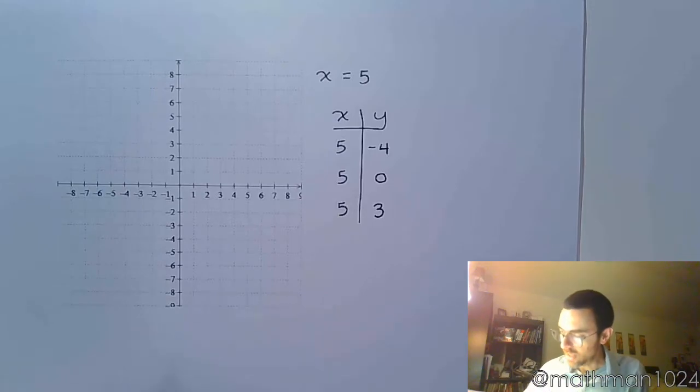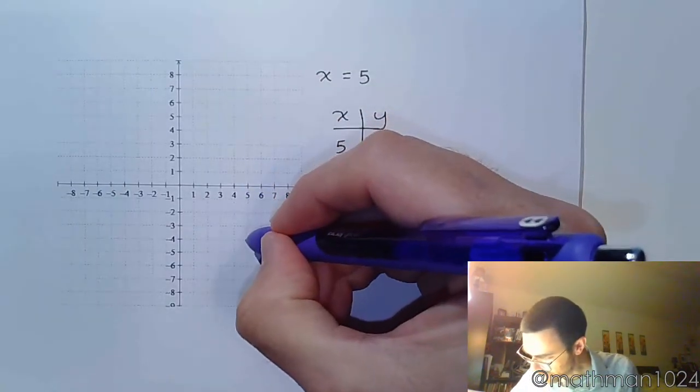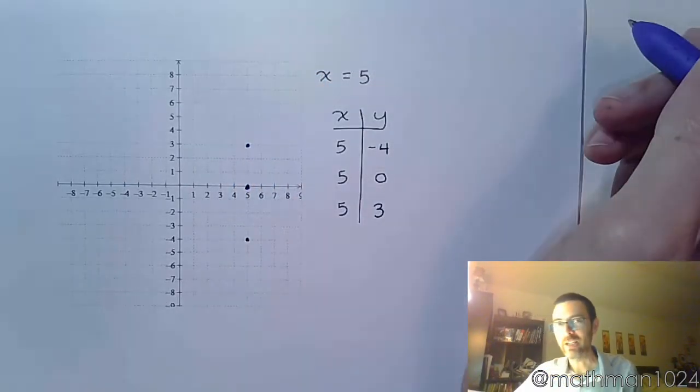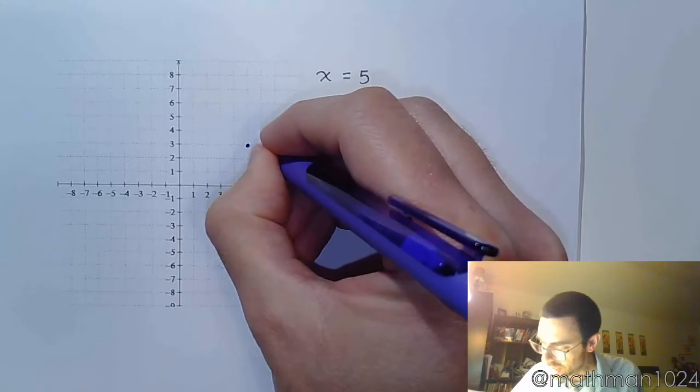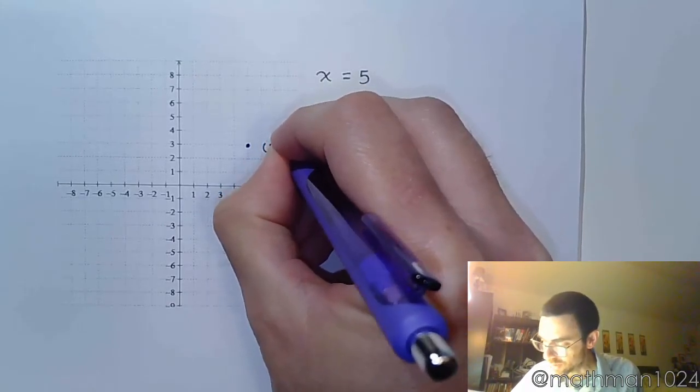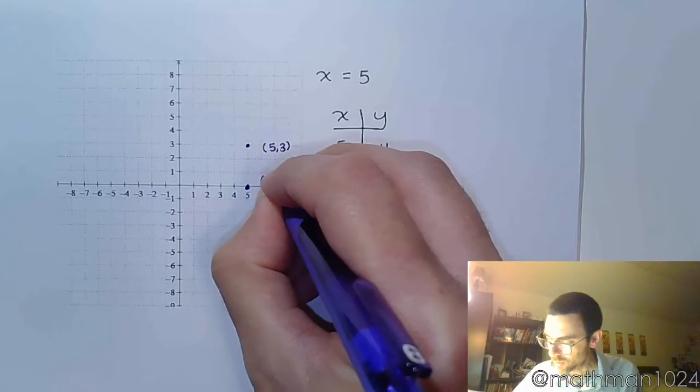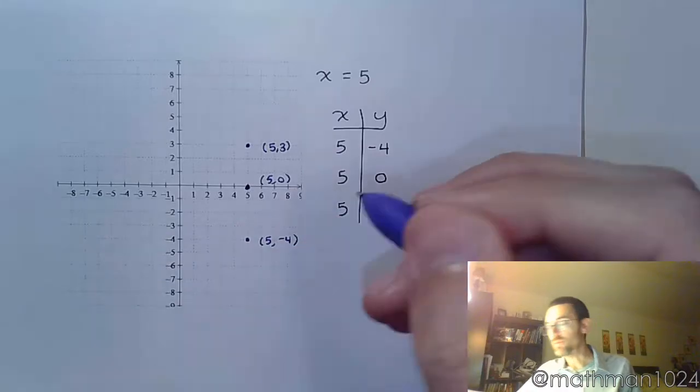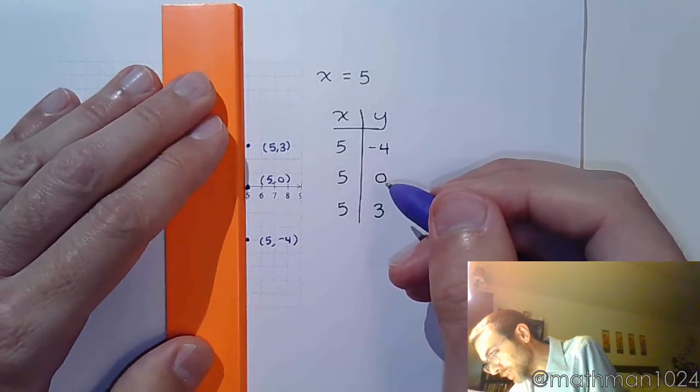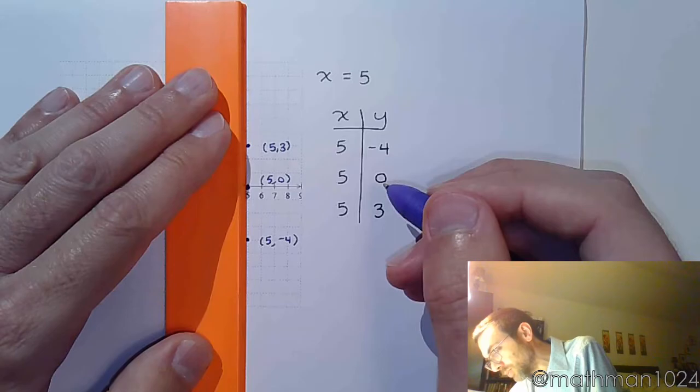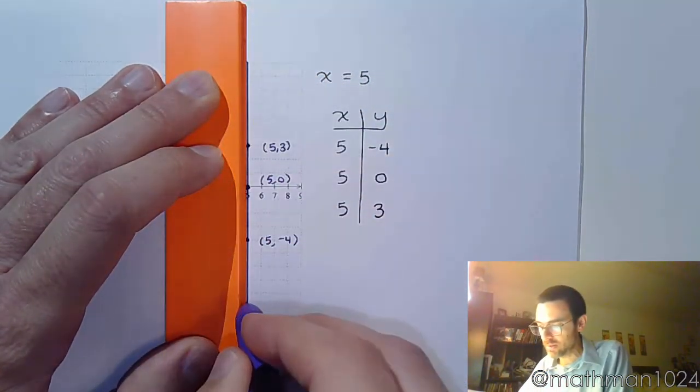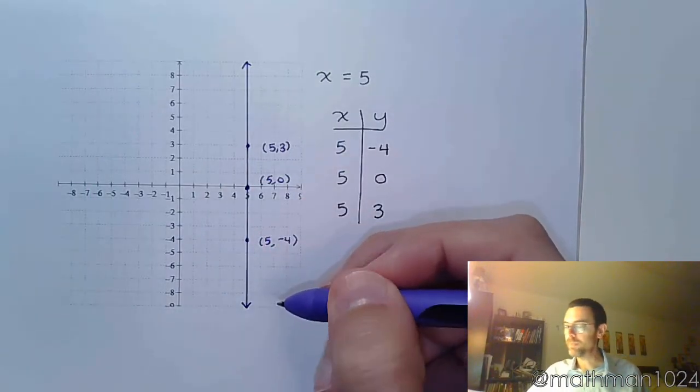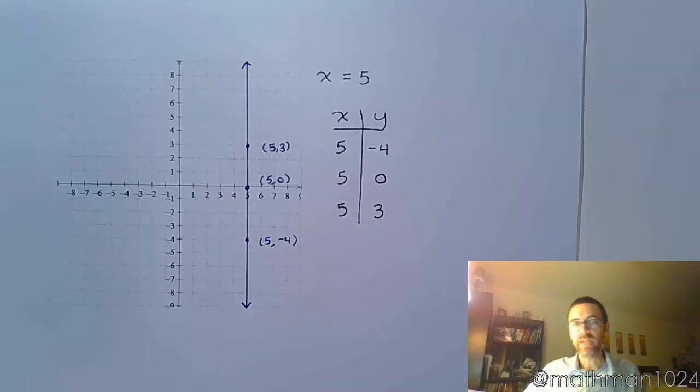And so what that means for us for the graph, we've got 5, negative 4, 5, 0, 5, 3. Really anything as long as x is 5. Look at the ordered pair here. This is 5, 3. This one is 5, 0. And this is 5, negative 4. So when it's x equals 5, this is the only place where these guys can be. And so you end up with the vertical line right here. So that's how you would graph something like x equals 5.